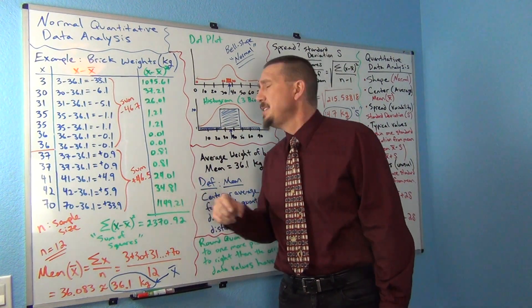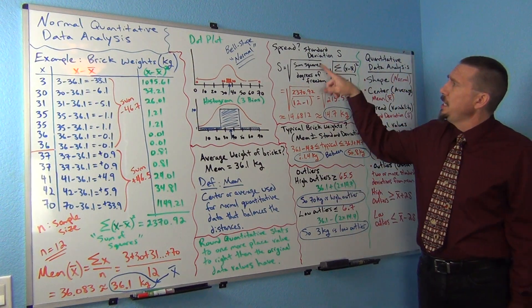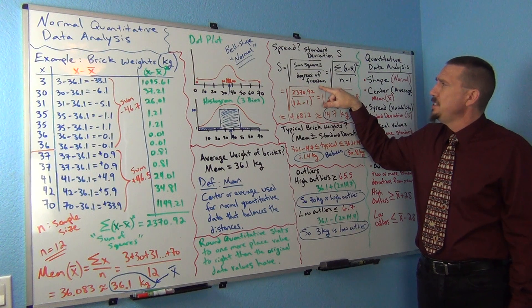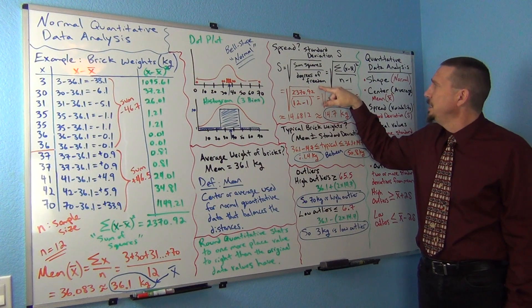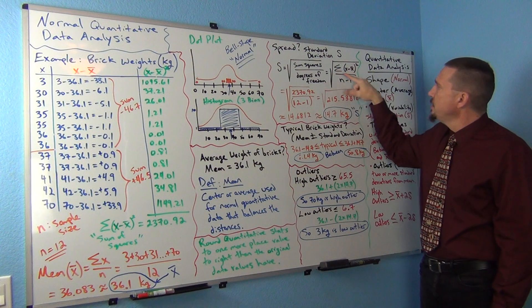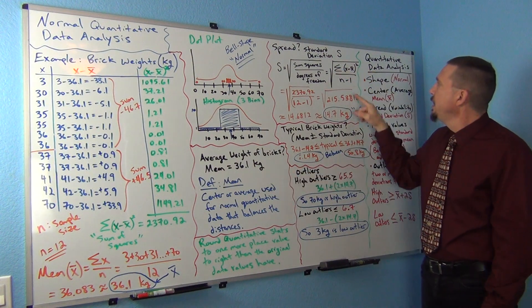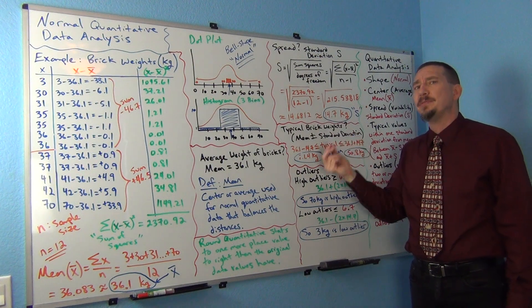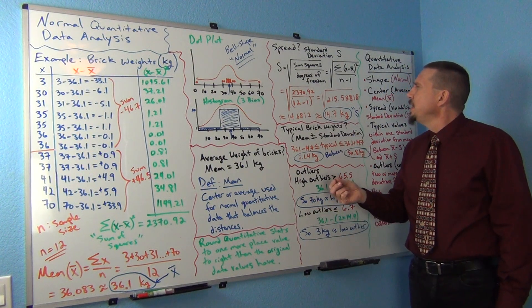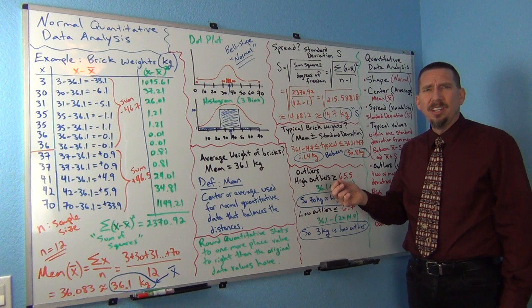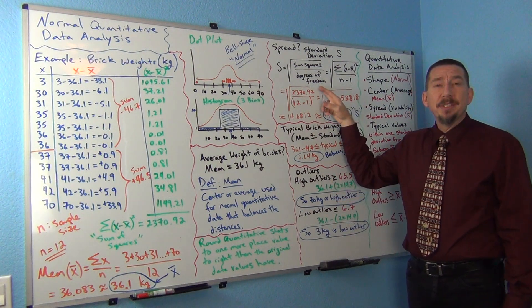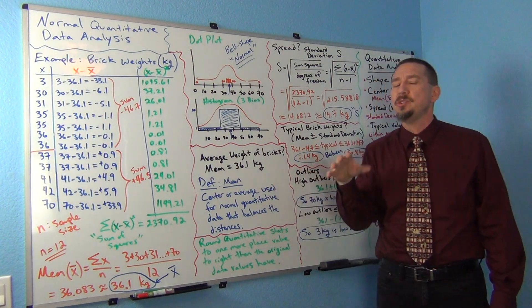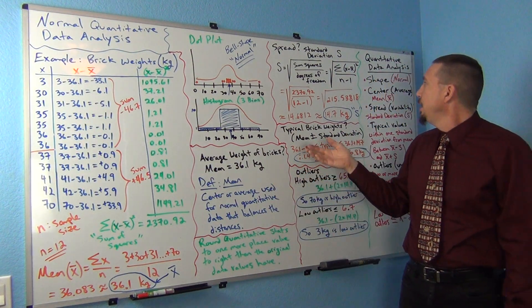So, how do we calculate standard deviation? Standard deviation is the square root of the sum of squares divided by degrees of freedom. Here's my sum of squares that I just calculated. And n minus 1 is sometimes referred to as degrees of freedom. Degrees of freedom is actually very famous and can be different in different circumstances. For one data set, it's usually n minus 1.